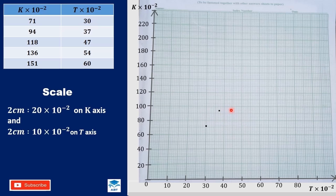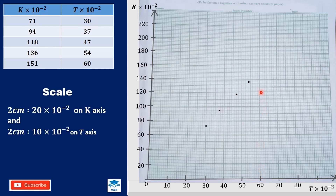The next point is 47 and 118: for 47 on the t axis, this is 40, we count 7 more boxes. For 118 on the k axis, this is 100, and 118 means we count 9 boxes since each box is 2. The next is 54 and 136: this is 50, we count 4 more boxes; for 136, this is 130, and we move 3 more boxes. The last is 60 on t and 151 on k: 150 is the middle of 140 and 160, so for 151 we move one more box. Then we draw the line of best fit passing through as many points as possible.